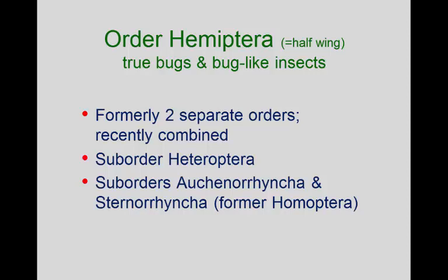The first order we're going to talk about is the Hemiptera. As I indicated before, these used to be divided into two orders: the true bugs (Hemiptera) and the bug-like insects (Homoptera). The molecular genetic folks have said they're really not all that separated — they need to be one order. The oldest name for this group was Hemiptera, though I actually prefer Heteroptera. We're going to stick with what most taxonomists have decided on.